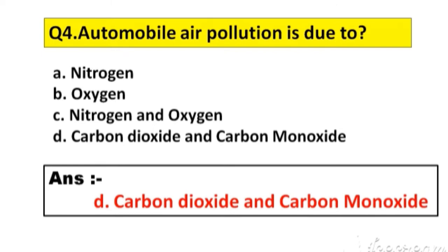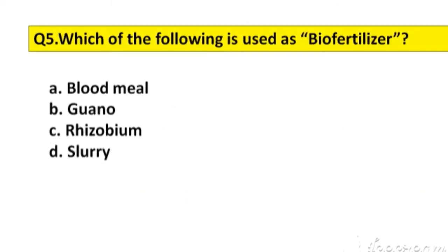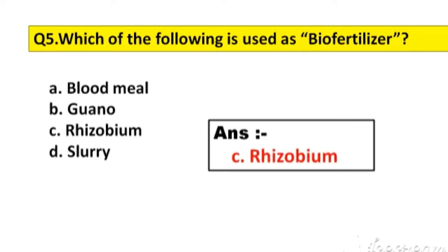Question number 5. Which of the following is used as biofertilizer? Option A: Blood meal. B: Guano. C: Rhizobium. D: Slurry. The right answer is option C, Rhizobium.